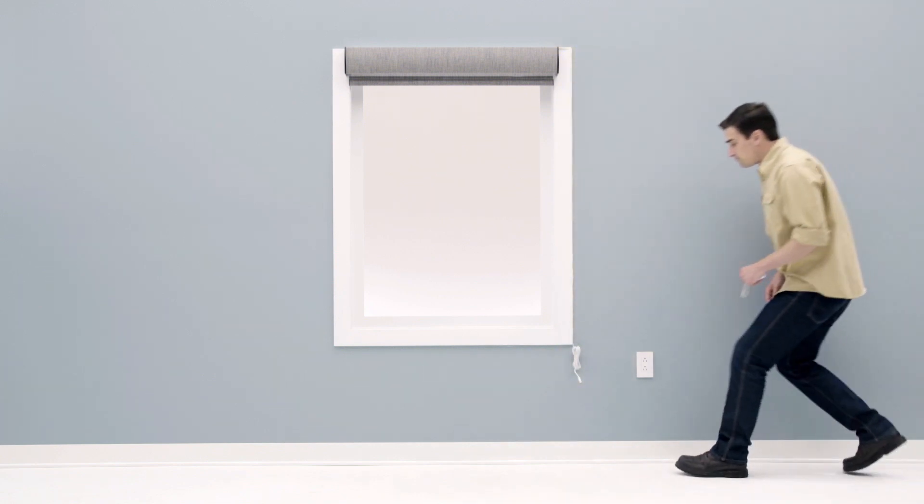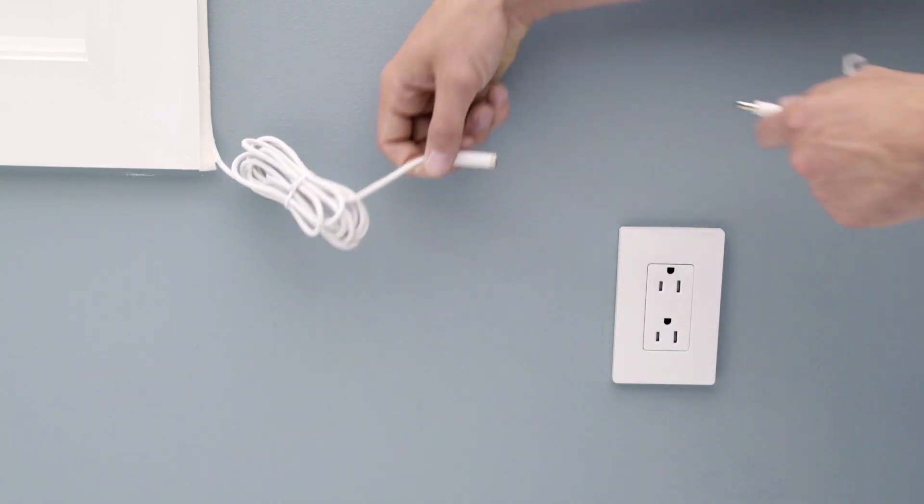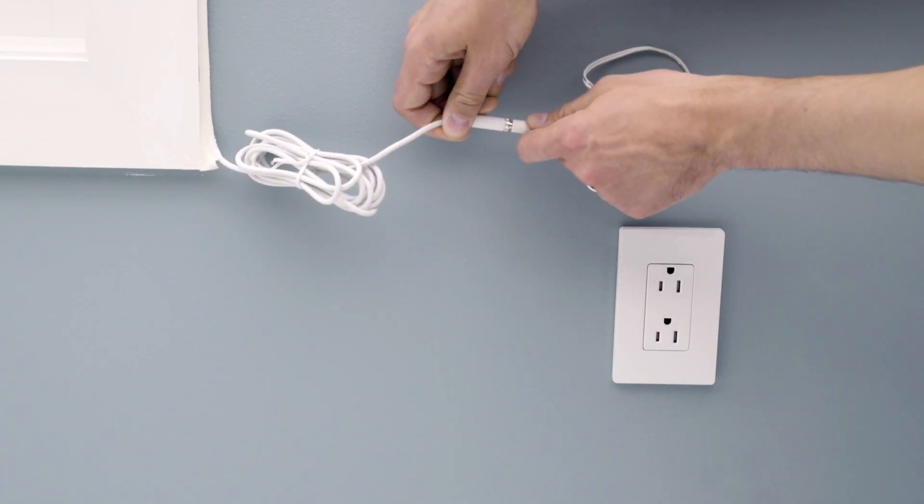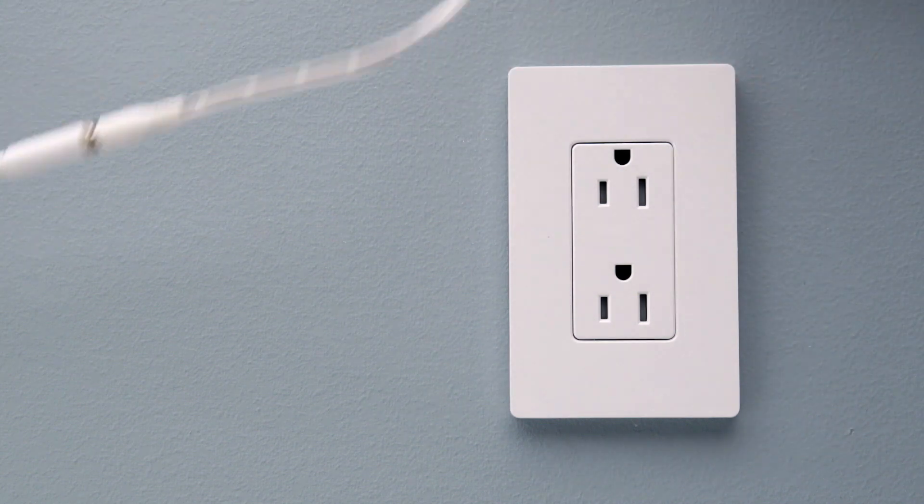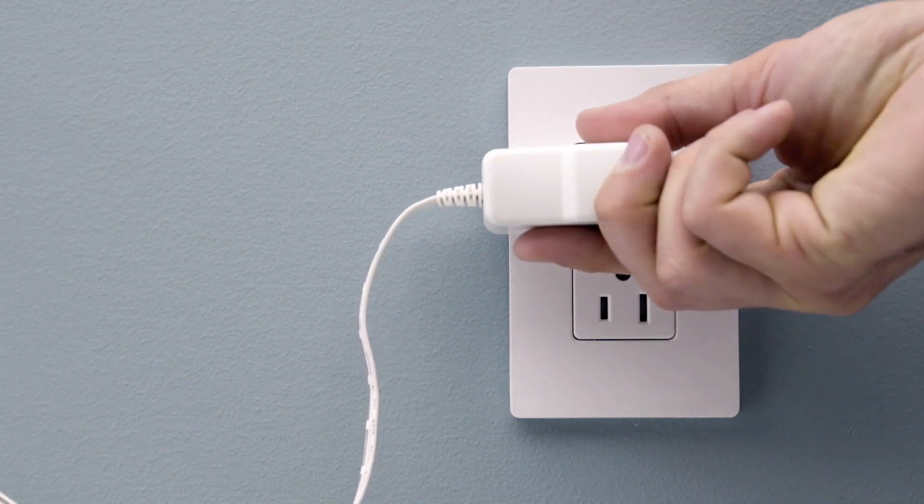Next, attach the power supply, which is purchased in addition to the shade. Make sure that the shade's power wire is routed clear of the shade and secured in a position where it won't interfere with shade movement. Connect the individual power supply to the power wire and plug the power supply into a compatible electrical outlet.